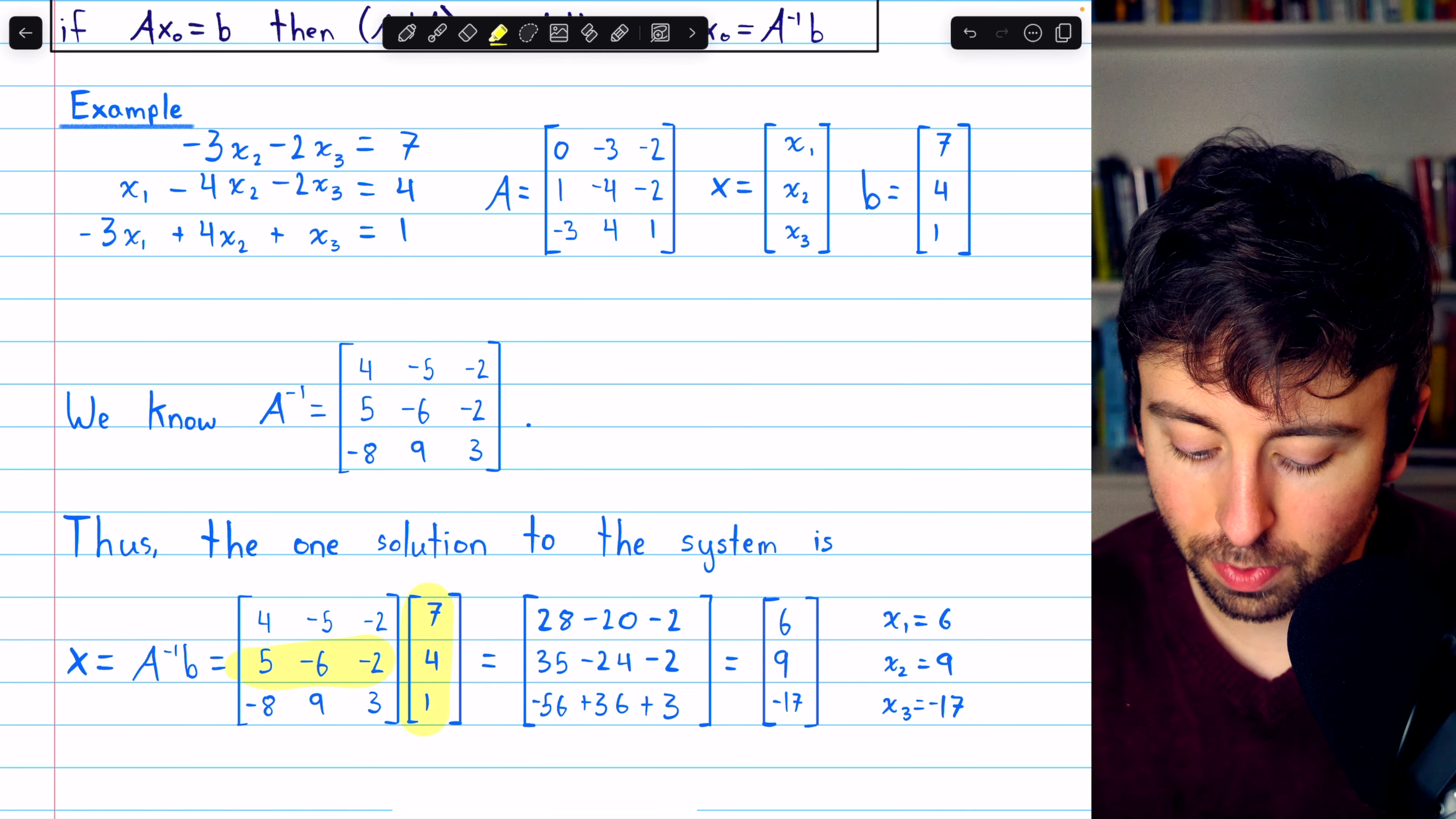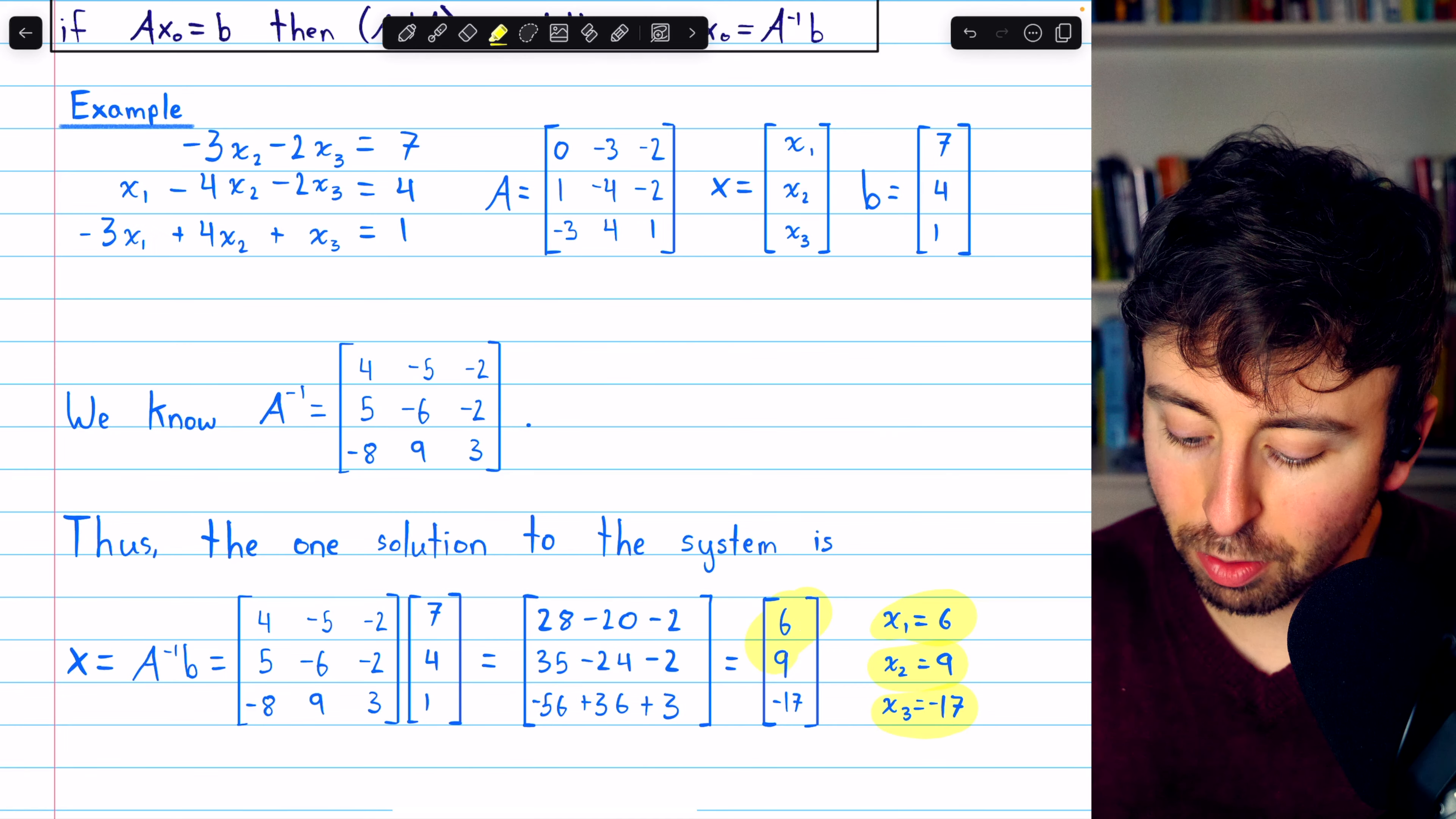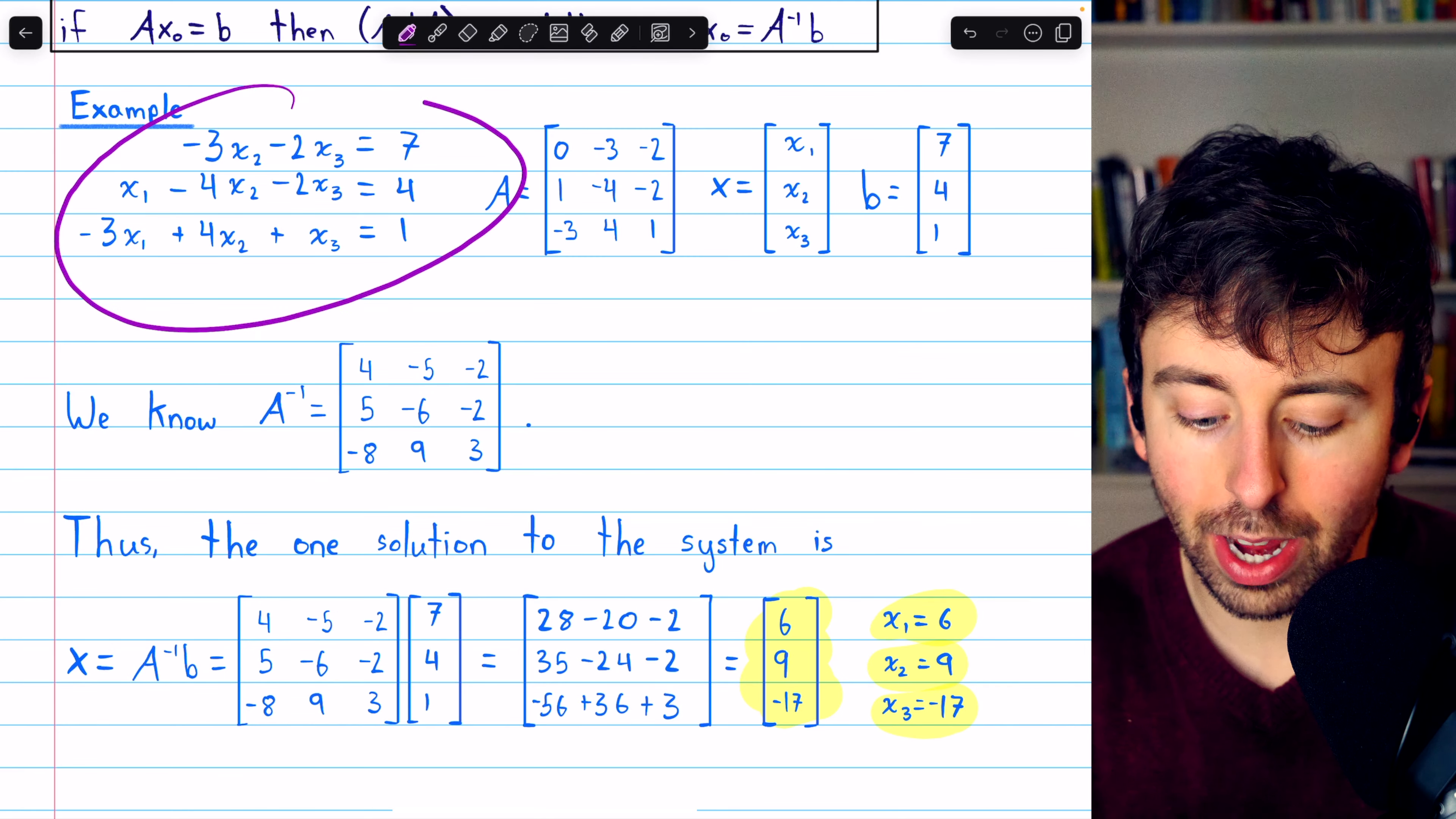5, negative 6, negative 2. 7, 4, 1. That produces 9. And in the end, we get that x1 equals 6, x2 equals 9, and x3 equals negative 17. That is the one unique solution to this system of equations.